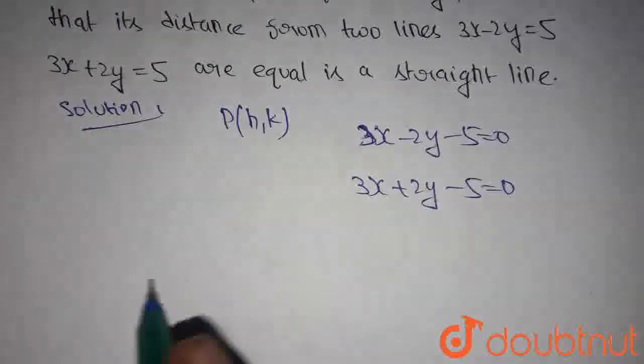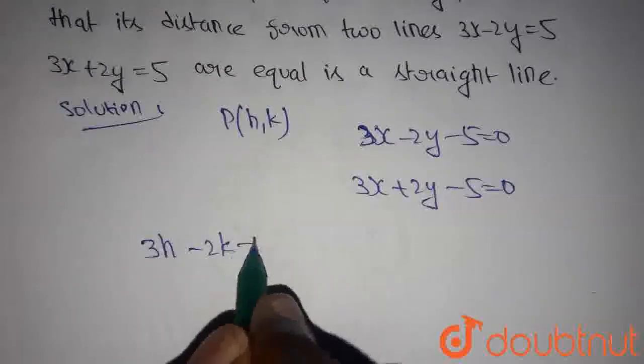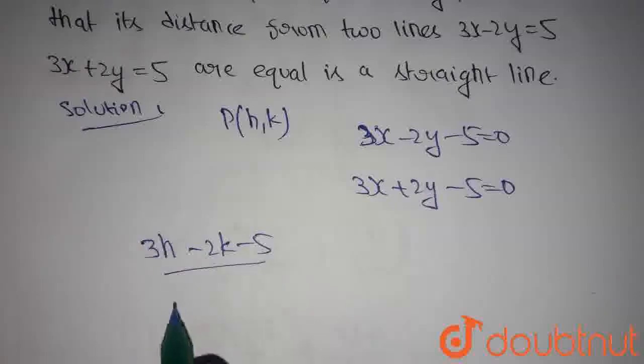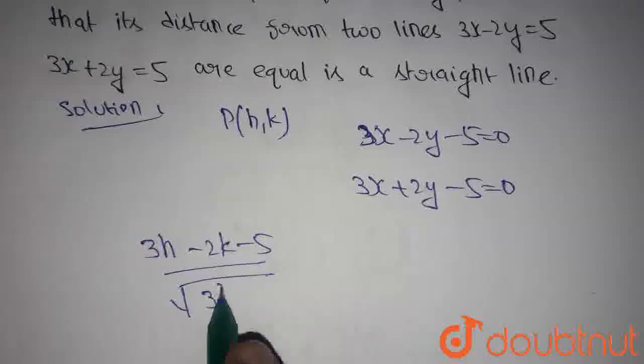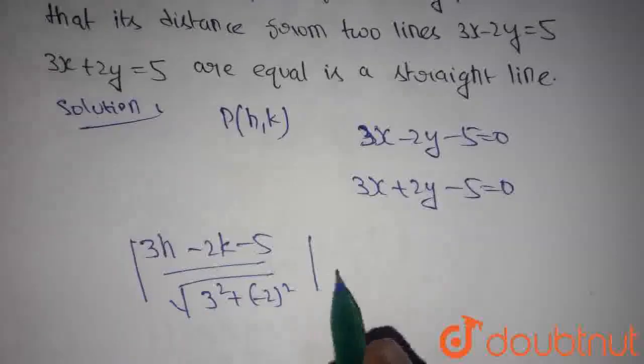The distance of the point from this line is given by |3h-2k-5| divided by √(3²+(-2)²). We have modulus since this is the distance.